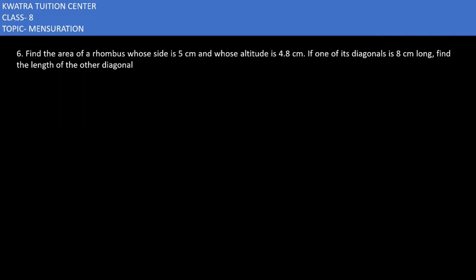Let's start with the sixth one. It says find the area of a rhombus whose side is 5 centimeters, whose altitude is 4.8 centimeters. If one of its diagonals is 8 centimeters long, find the length of the other diagonal. So here we have given two ways for the area of rhombus formula.